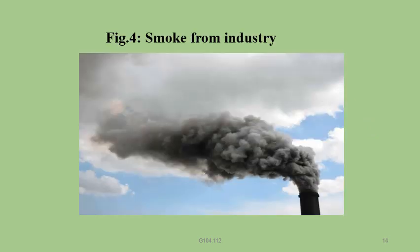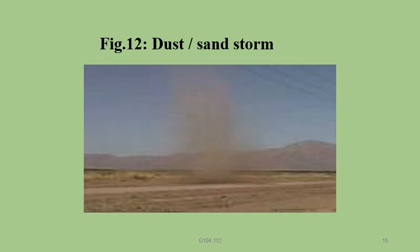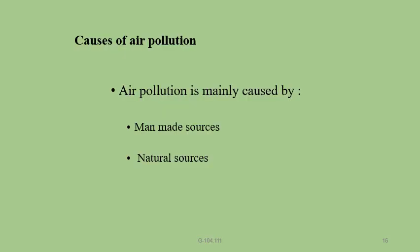This is a photo of smoke from industry. In the industrial area, smoke comes from the boilers. This is the smoke from industries. Next is the figure of dust — dust, sand, and particles stored in the atmosphere also act as aerosol pollutants.